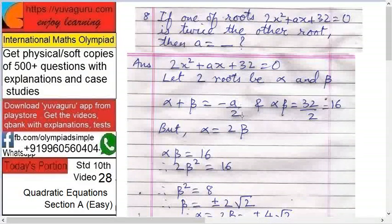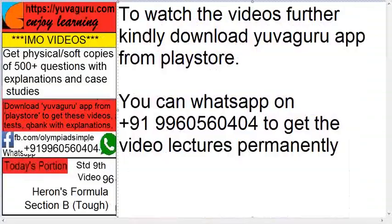So alpha plus beta equals minus a upon two and alpha beta equals 32 upon 2, that is 16. Alpha equals 2 beta, it's given in the question. Now let's put the values. Alpha into beta equals 16.